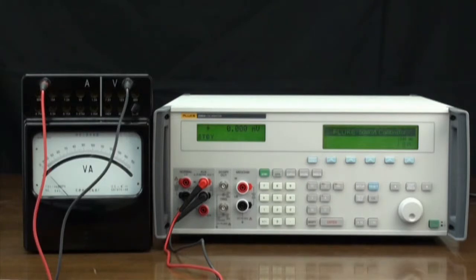We'll use an analog volt-amp meter to demonstrate. This analog meter has two input terminals on the top and a switch to select voltage or current function and ranges.